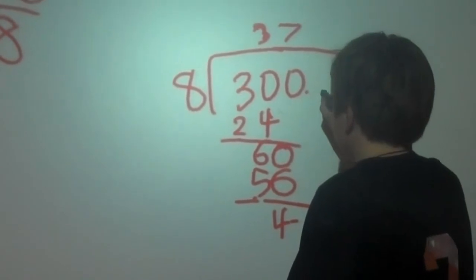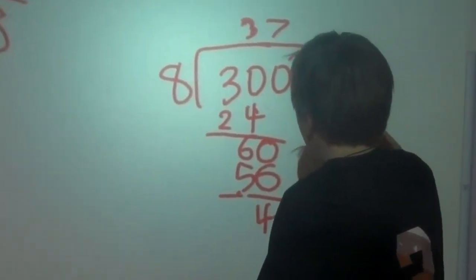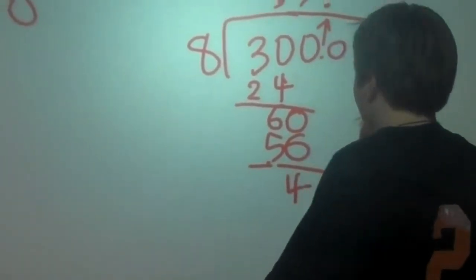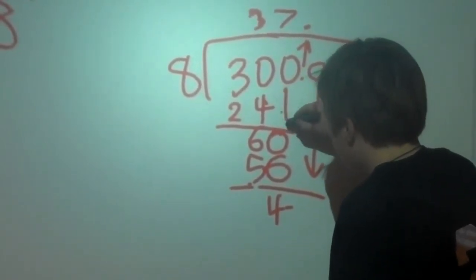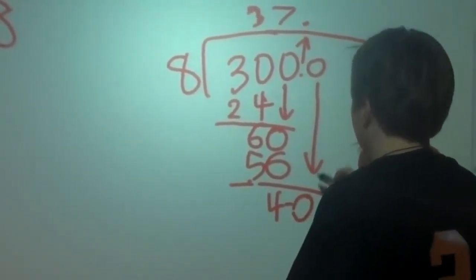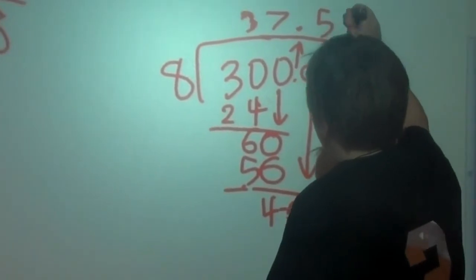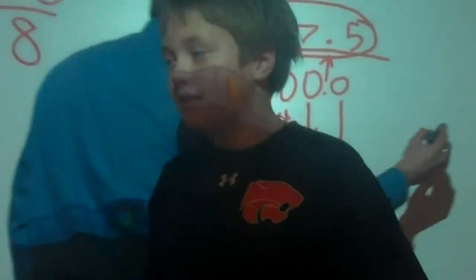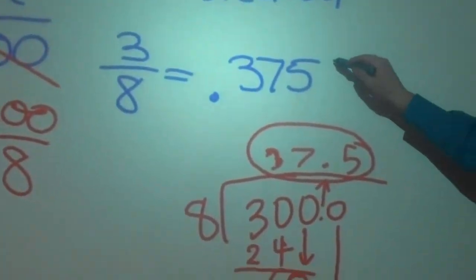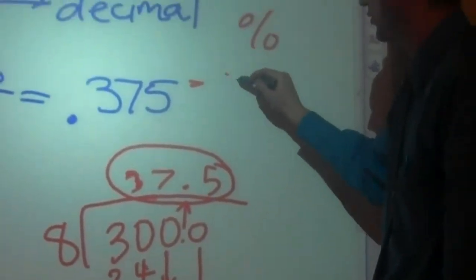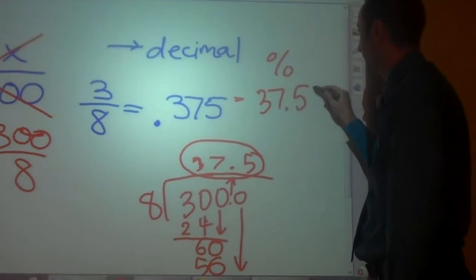Now you have to add a decimal. Bring the decimal up and then bring down the decimal. So then that equals forty. So it goes in five times. Nicely done, Will. So thirty seven point five is eight. Okay. So then when it comes to the percentage form, it's thirty seven point five percent.